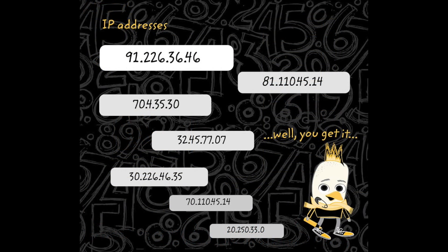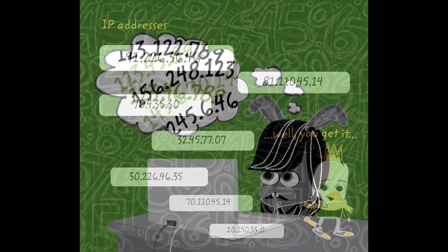Do you remember that computers on the internet talk with numbers and codes? An address to a computer that is connected to the internet can look like this. The number addresses on the internet are called IP addresses. IP addresses are quite long — it can be 91.226.36.46. You can't read and remember so many numbers and points.